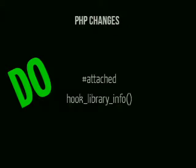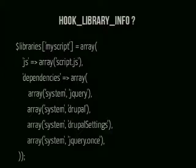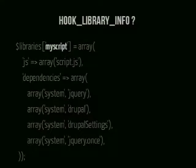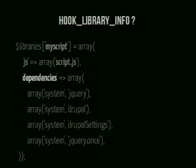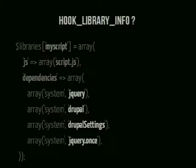hook_library in Drupal 7 is renamed to hook_library_info. For those not familiar with hook_library, it basically declares: my script needs these other things to work. You have the key — say, my_script — which you'll use to reference it in other places like #attached. Then you declare which file it is, optionally CSS files, and then the dependencies. In Drupal 7, the libraries you could assume were available on every page were jQuery, Drupal, drupalSettings, and jQuery.once. When you declare your library this way, it's just like it was in Drupal 7.